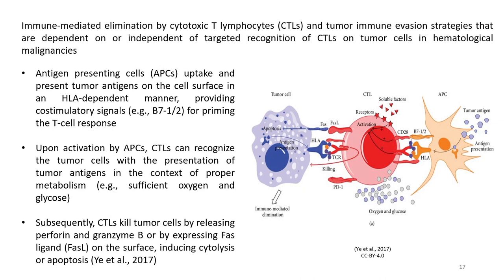Immune evasion mechanisms include defective co-stimulation, immune checkpoint blockade, increased suppressive immune cells, tumor-altered metabolism, regulated soluble factors, and impaired apoptosis-related pathways not directly related to targeted recognition of CTLs. In cellular immunity, APCs including dendritic cells, macrophages, and subsets of B cells phagocytose and present tumor antigens on the cell surface in an HLA-dependent manner, providing co-stimulatory signals for priming the T cell response. Upon activation by APCs, CTLs can recognize tumor cells via HLA-dependent presentation of tumor antigens, resulting in CTL-mediated lysis or apoptosis.